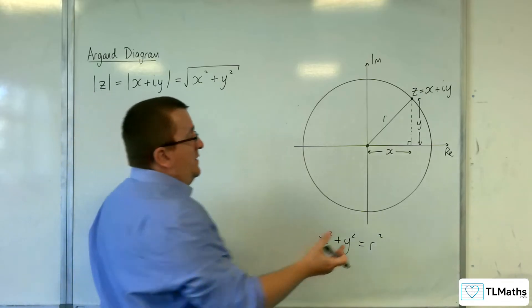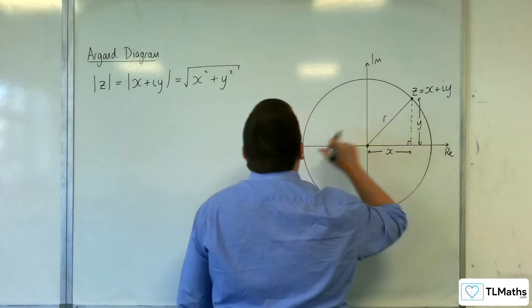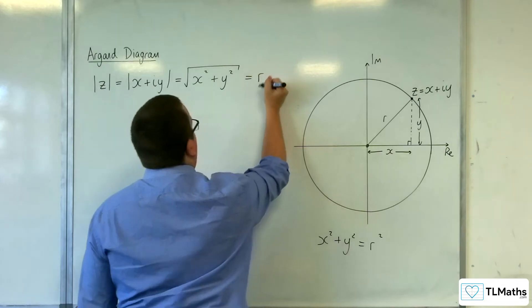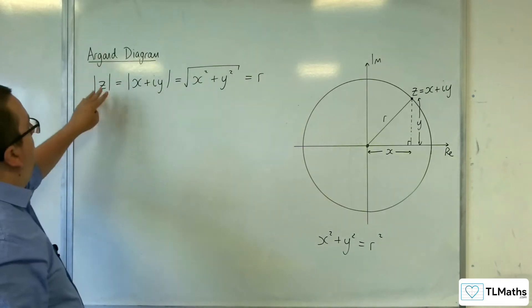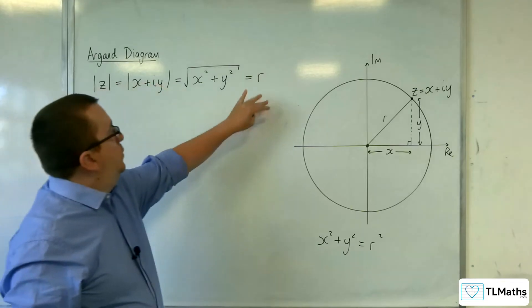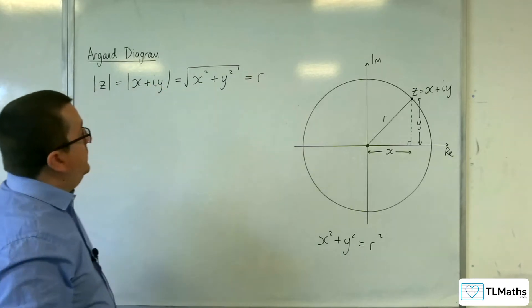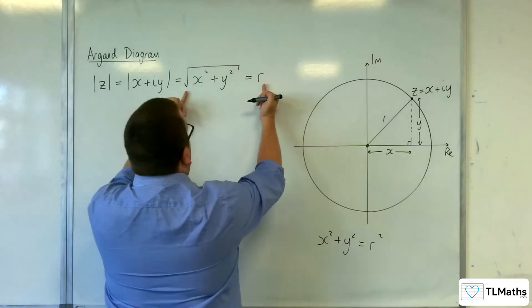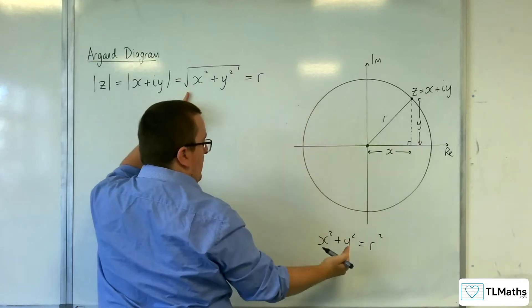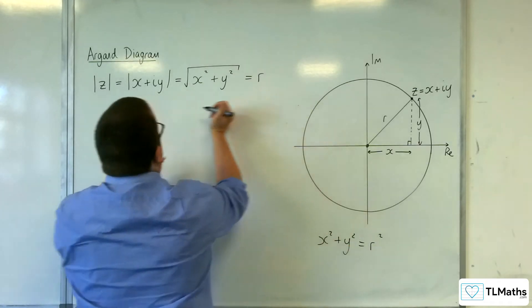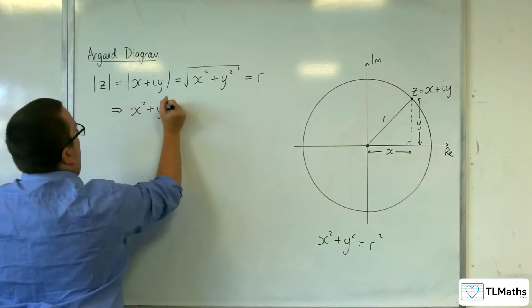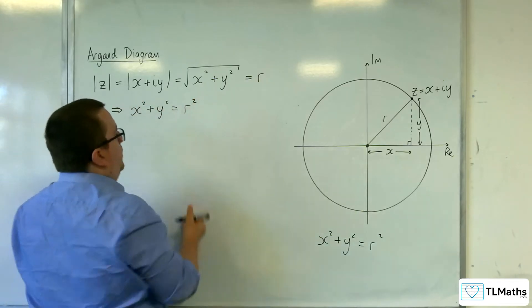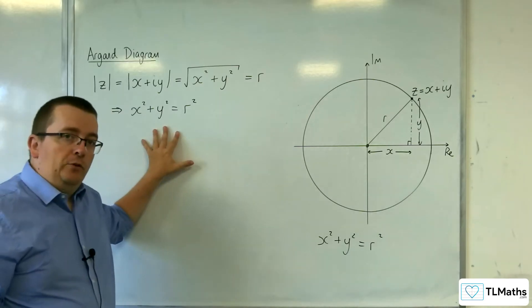Now, on our diagram, the length of the complex number is r. So, hence, if you're saying that mod z equals r, then what you've got here is precisely what you have here. If you square both sides, then you get to your x squared plus y squared equals r squared, which is your equation of the circle.